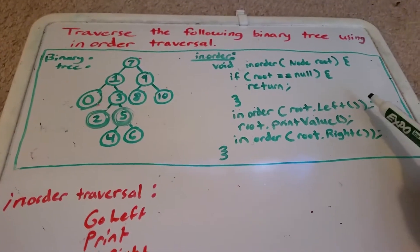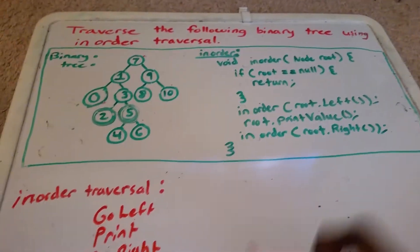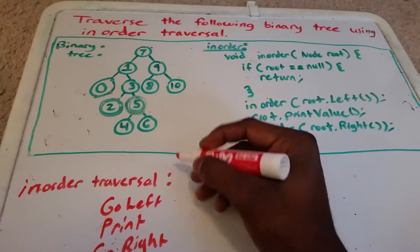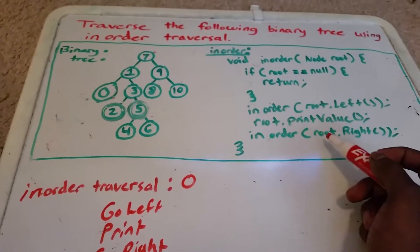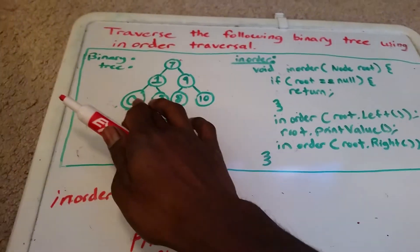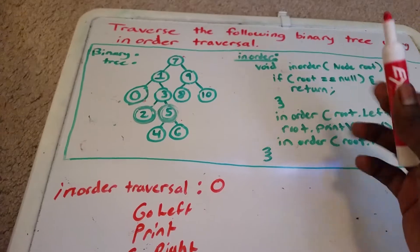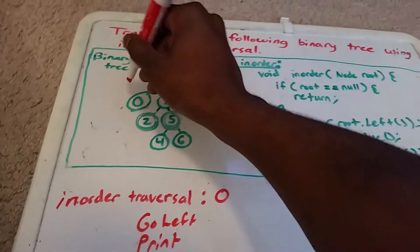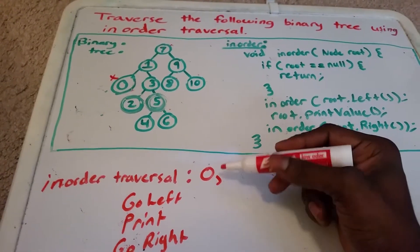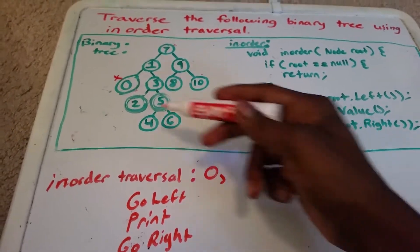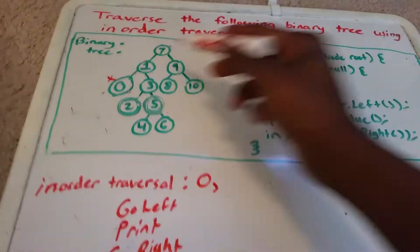We're going to go back to the previous node, which was 0. We went as far left as possible, so now we're going to print that value. The value we're printing is the value of the node we're currently on, which is 0. Now we've got to go as far right as possible. To the right of node 0 is nothing as well, so we're just going to return, and we're done here. Now we go back up and we're at the 1 node again.